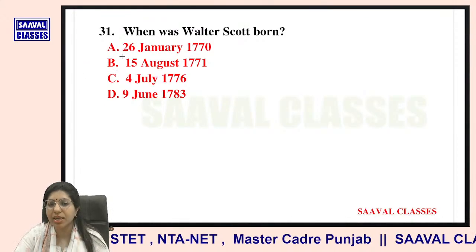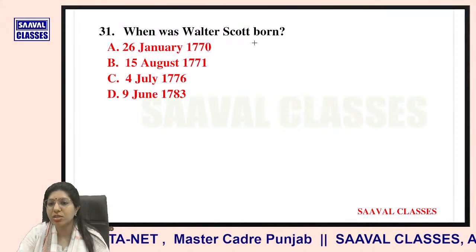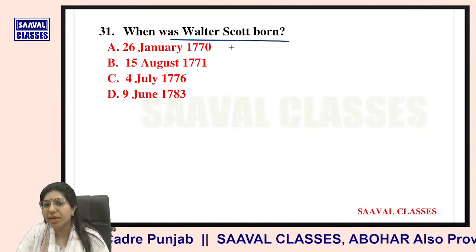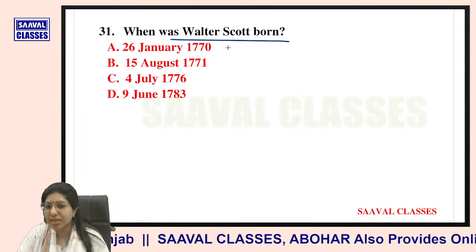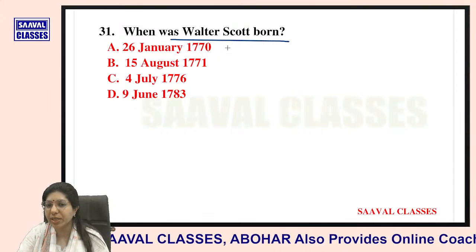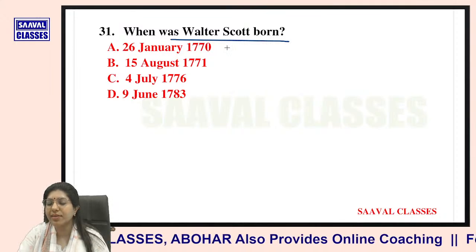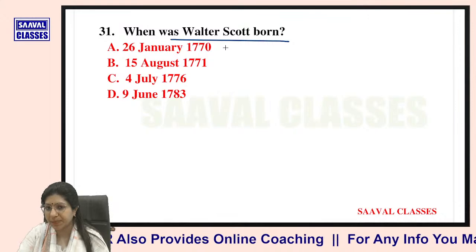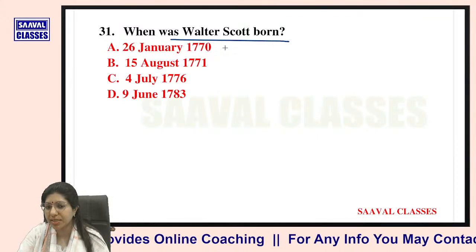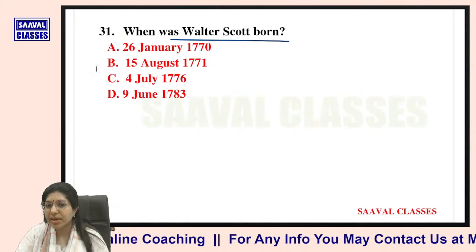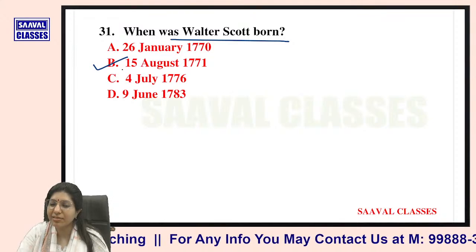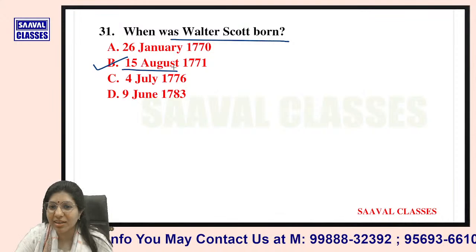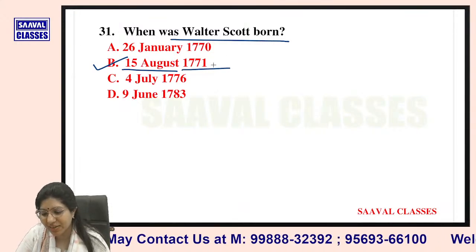Question number thirty-one: When was Walter Scott born? Options are 26th January 1770, 15th August 1771, 4th July 1776, or 9th June 1783. He was born on 15th August 1771 — easy to remember.